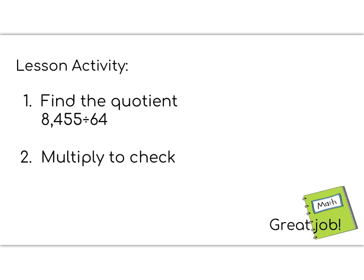All right, time for your lesson activity. Your job is to divide 8,455 by 64. Remember, take it one step at a time. So does 64 go into 8? Nope. Does 64 go into 84? Yes. So your first digit's going to be in the hundreds place. 64 goes into 84 one time. 64 goes underneath, and you subtract. 4 minus 4 is 0, 8 minus 6 is 2. Bring down the 5 and continue dividing.